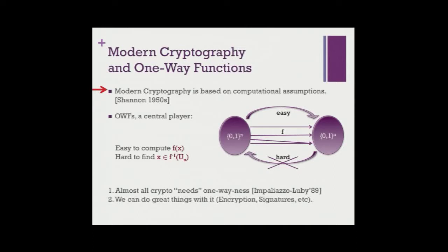A few words about modern cryptography and one-way functions. From the 50s, after the work of Shannon, we know that many interesting things in cryptography are not possible in an information-theoretically secure way. So we are used to computational assumptions now. In modern cryptography, one-way functions have been a very central player in this framework. If you assume that some function is easily computable but hard to invert, you can do many things with it.